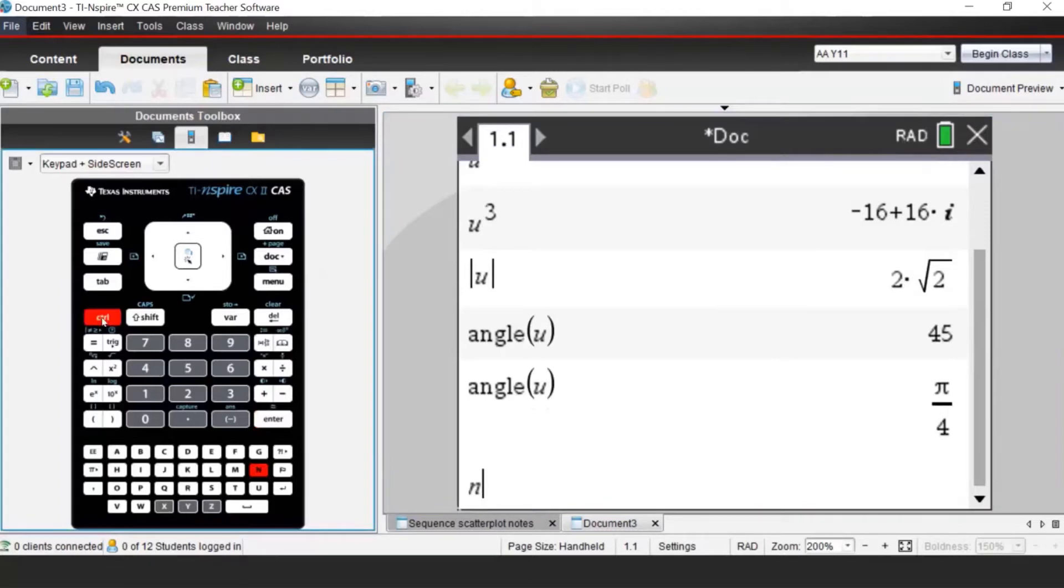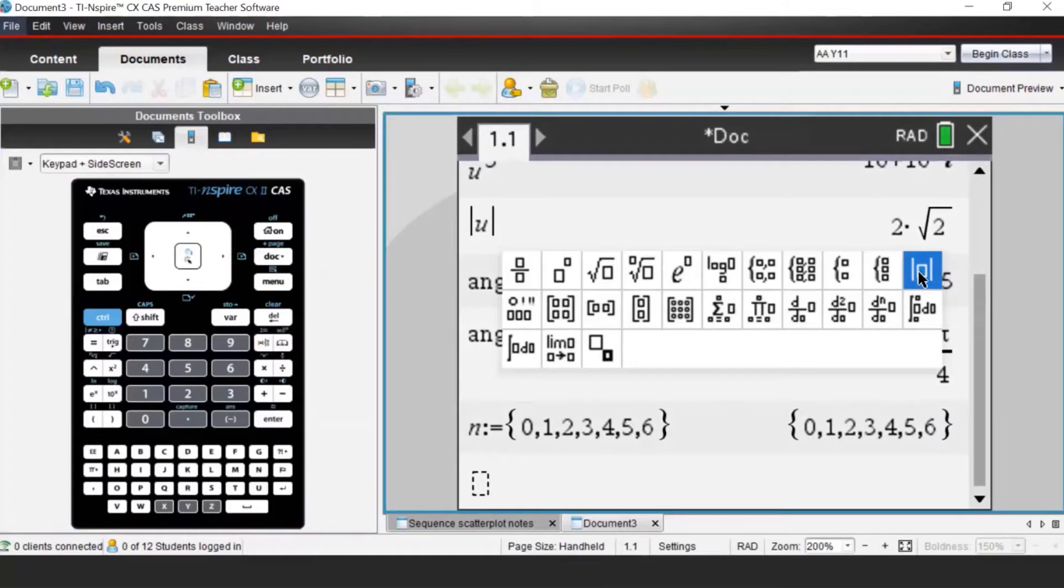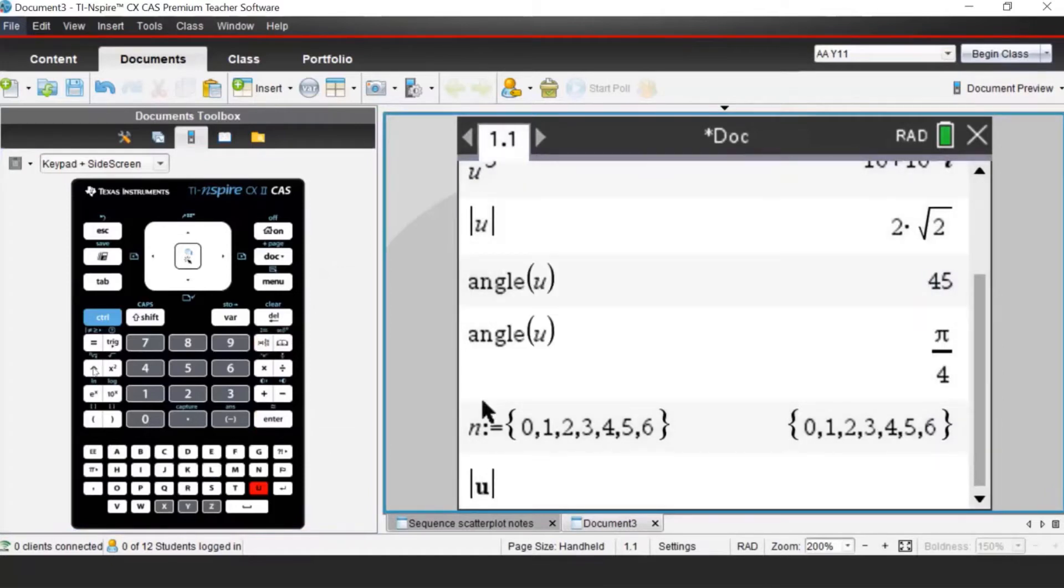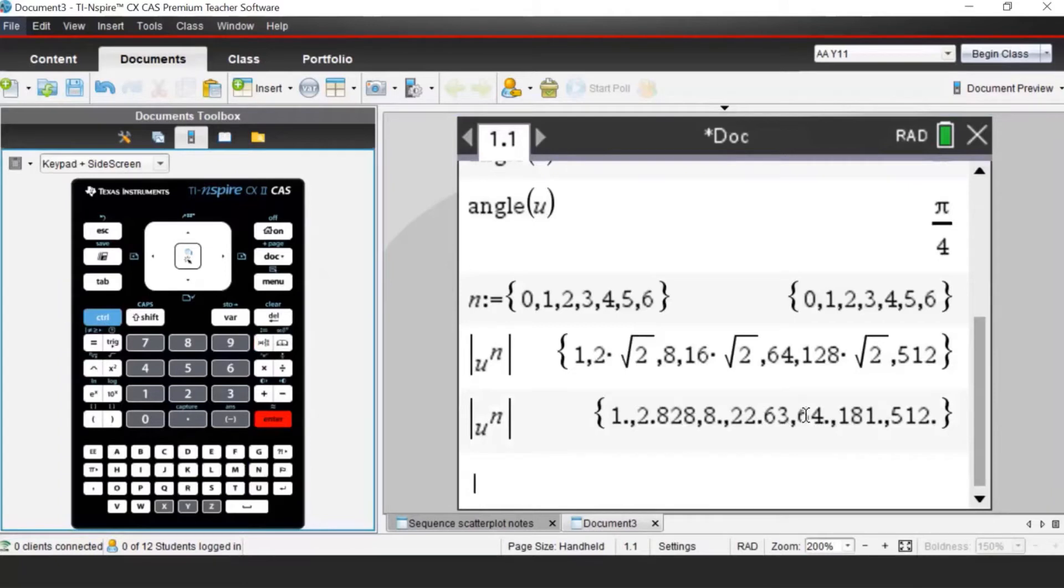Now instead of doing all the powers one by one, I can also define the powers. Let n be equal to, using the list notation, 3, 4, 5, 6. If I now use the modulus of U to the power of n, it will display all the moduli of my complex number to the power of n. These are the exact values, and I can see that those numbers are increasing.